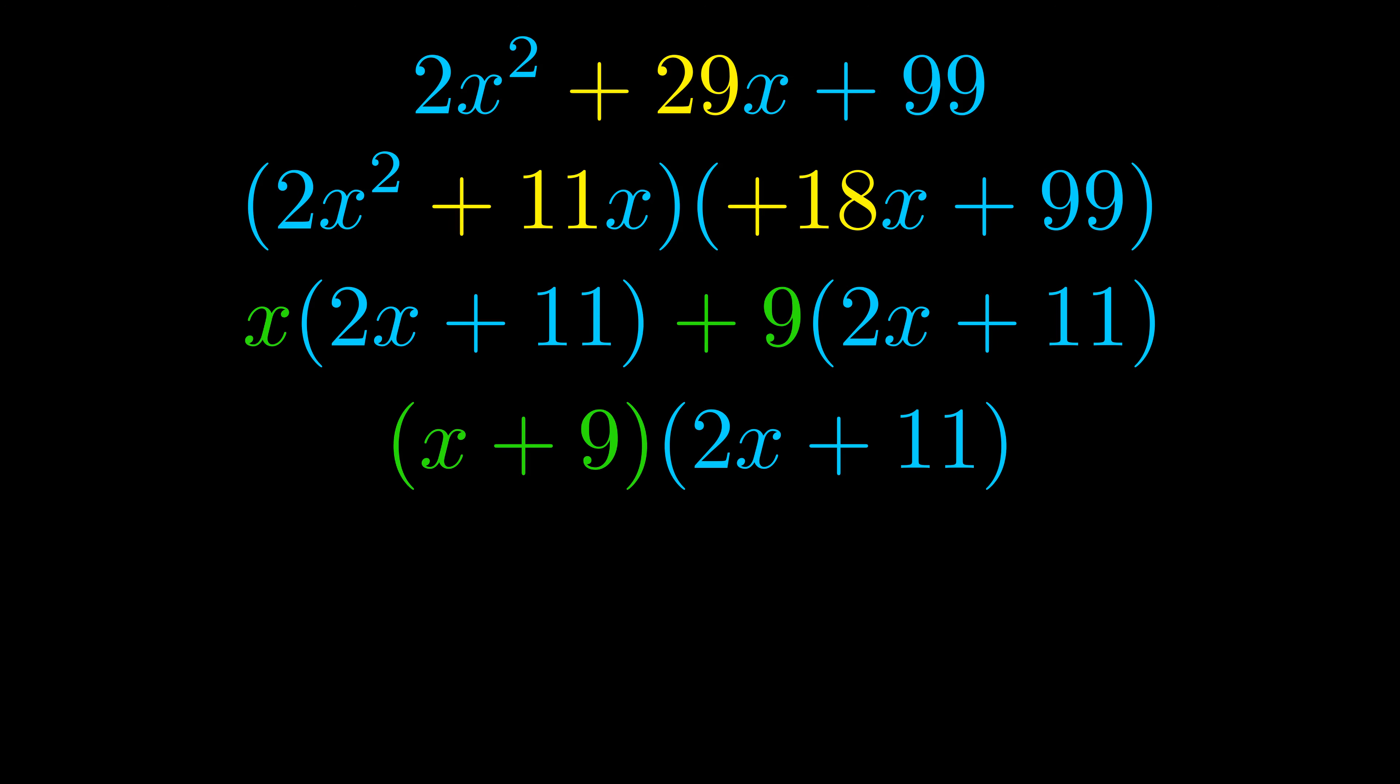The blue values are the same. Those blue values will become one of our factors and we will combine the two green values, the GCFs that we pulled out, to get the other one. And that is our fully factored equation.